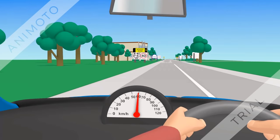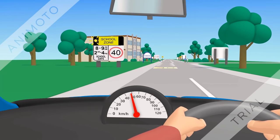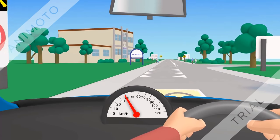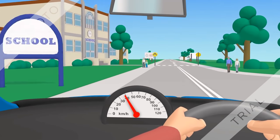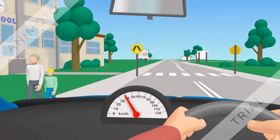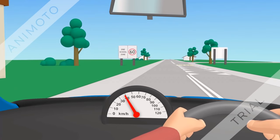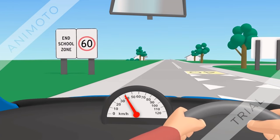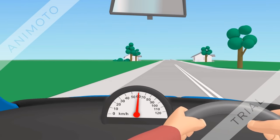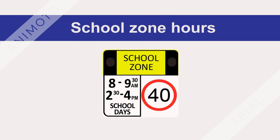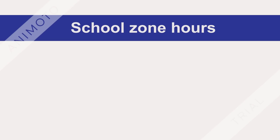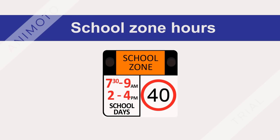School zones: drivers must obey the school zone speed limit of 40 kilometers per hour between the school zone and end school zone signs. The school zone speed limit applies on New South Wales government school days and during the times shown on the school zone sign. School zone hours are normally 8:00 a.m. until 9:30 a.m. and then 2:30 p.m. until 4:00 p.m. Some schools have non-standard school zone times, and these non-standard school zones have signs that show the different hours of operation in red.